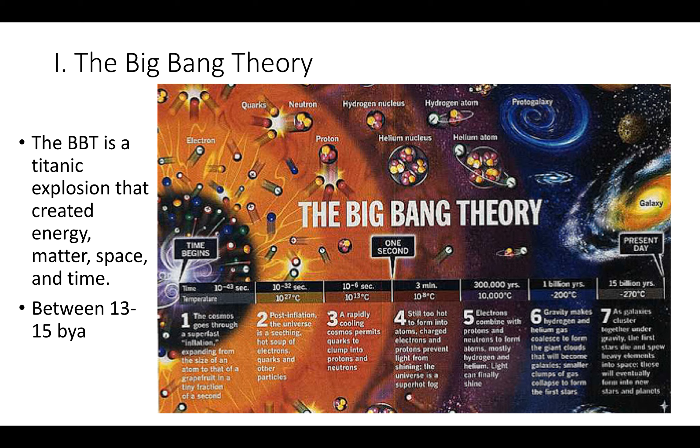Step four, still too hot to form into atoms, charged electrons and protons prevent light from shining. The universe is a super hot fog. Step five, the electrons combine with protons and neutrons to form atoms, mostly hydrogen and helium. Light can finally shine. Step six, the galaxy era. Gravity makes hydrogen and helium gas coalesce to form the giant clouds that will become galaxies. Smaller clumps of clouds collapse to form the first stars. And then as galaxies cluster together under gravity, the first stars die and spew heavy elements into space. These will eventually form into new stars and planets.